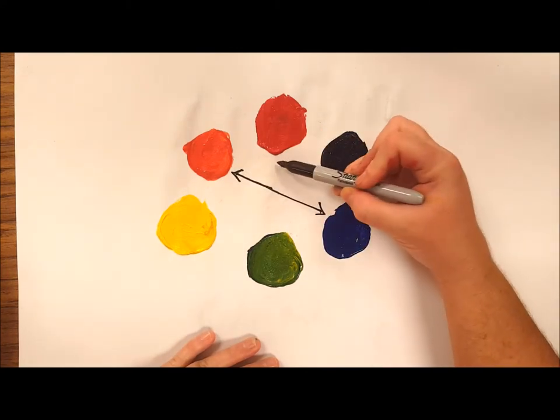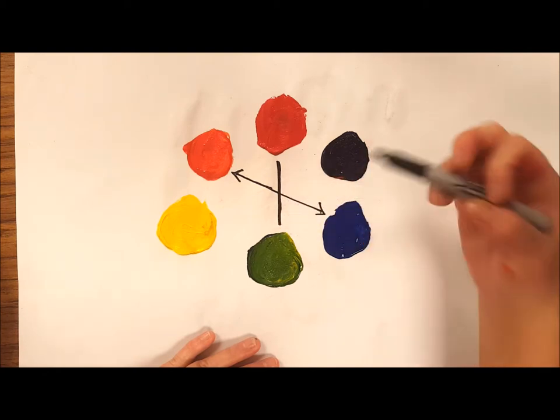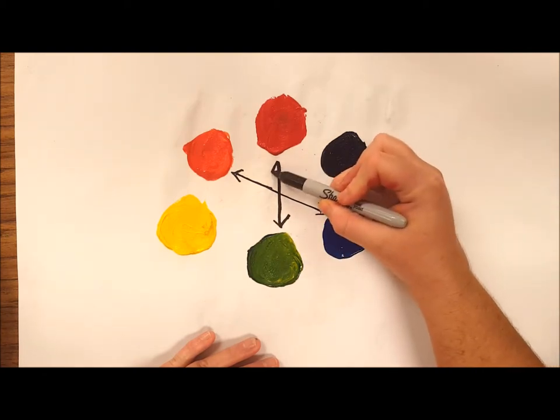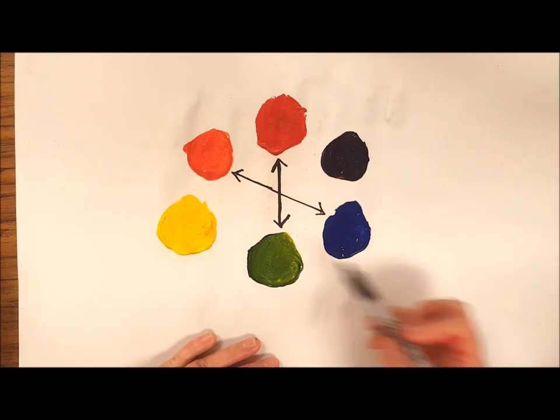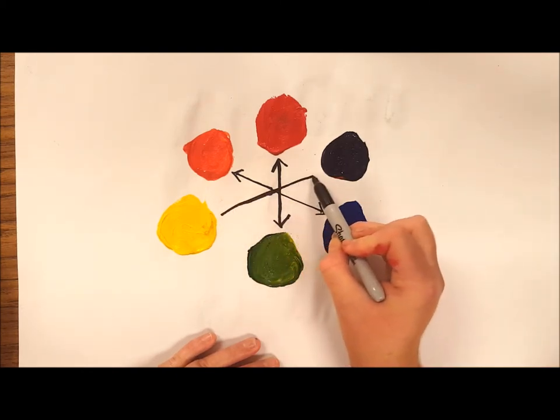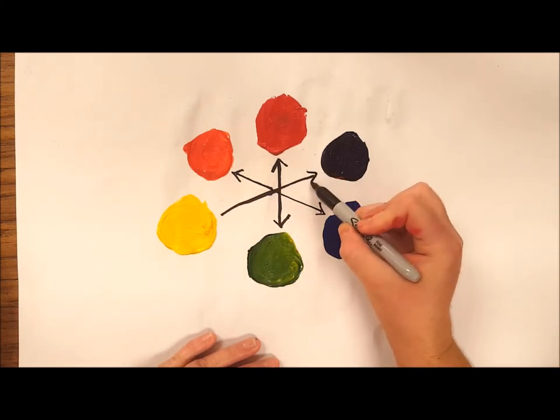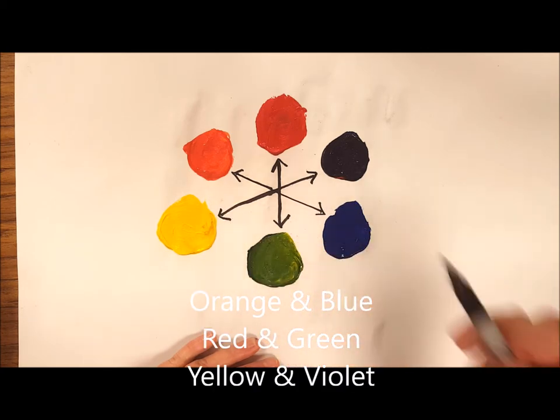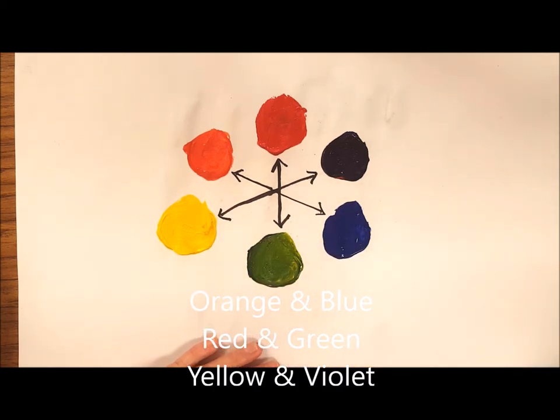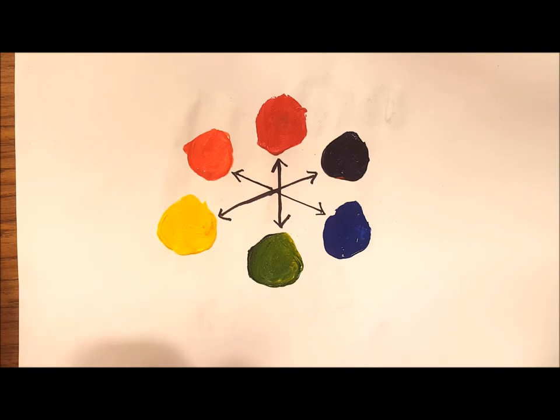That also means that red and green are complementary colors because they are across from each other. And finally, that means that yellow and purple are complementary colors because they're across from each other. Complementary colors are often put together because they make each other stand out or they complement each other.